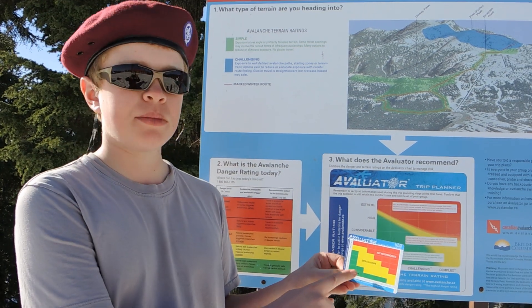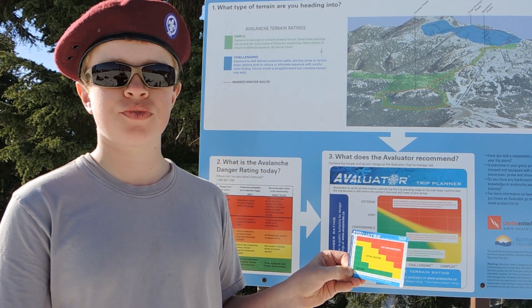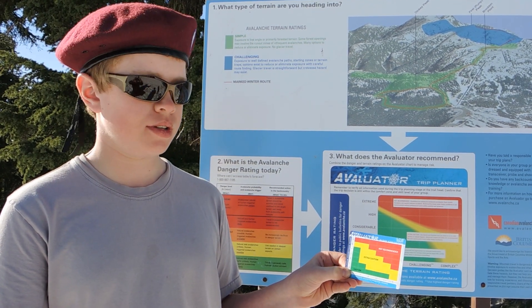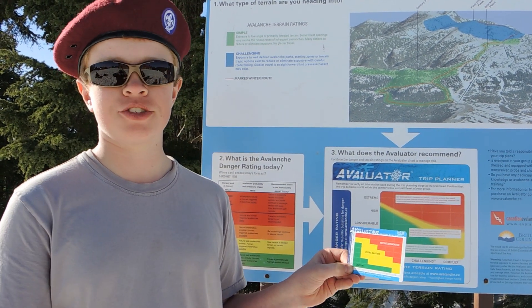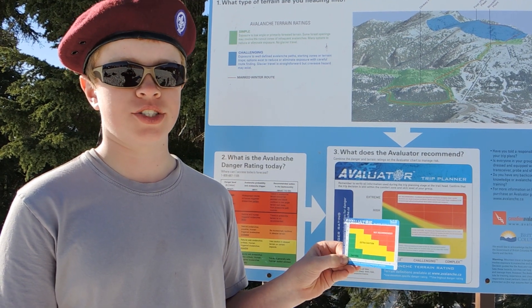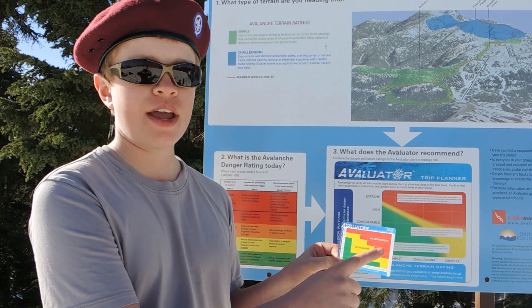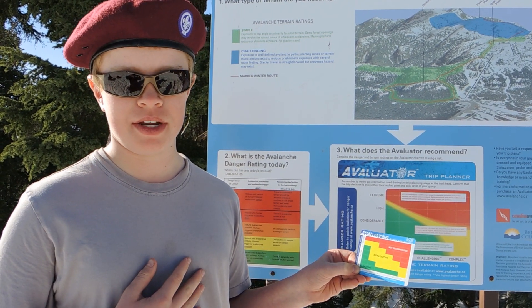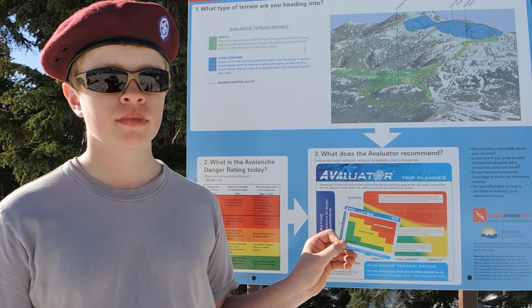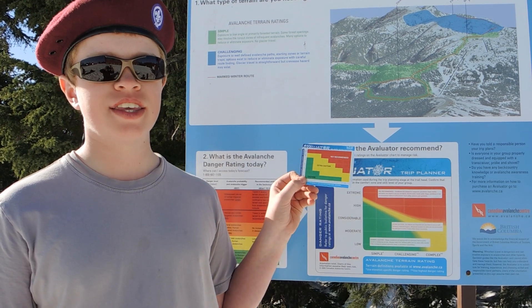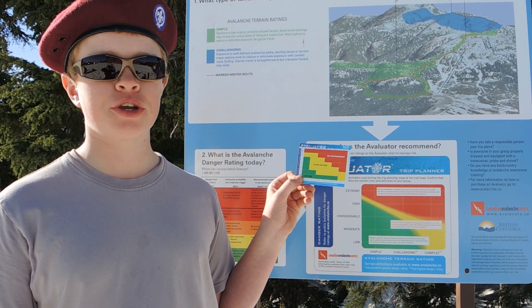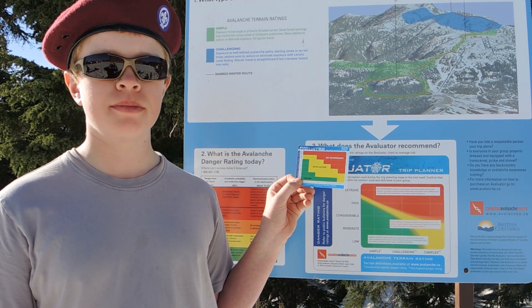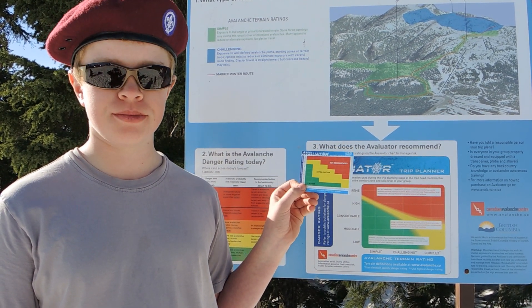Green means exercise regular caution. Yellow means exercise extra caution. And red means our trip is not recommended. That's the Evaluator Trip Planner system version 2.